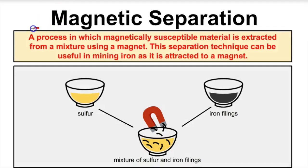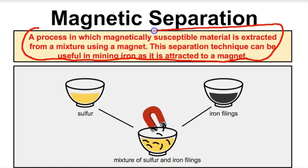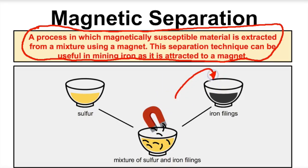Magnetic separation is another separation technique. Magnetic separation is the process in which magnetically susceptible material is extracted from a mixture using a magnet. This technique can be useful in mining iron, as it is attracted to the magnet. If we have a dish containing sulfur and iron filings — a mixture of sulfur and iron filings — we can bring a magnet over the dish, the iron filings will jump onto the magnet, and we can put them in a separate dish. What's left over will be sulfur. We've separated this mixture based on the magnetic properties of the particles, and this is a physical process — no chemical change has taken place.